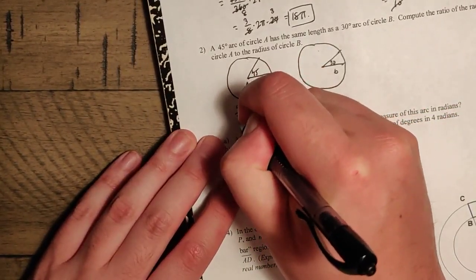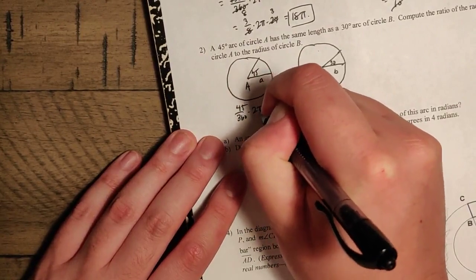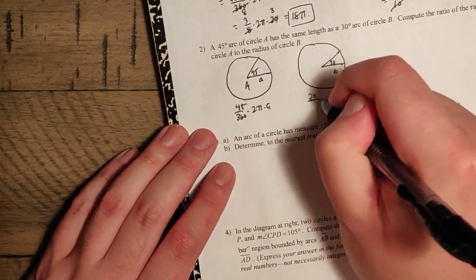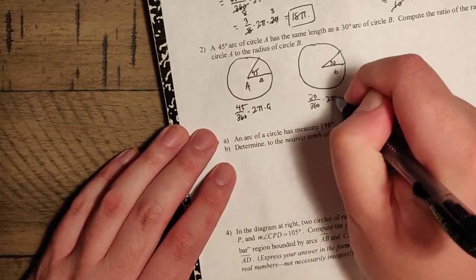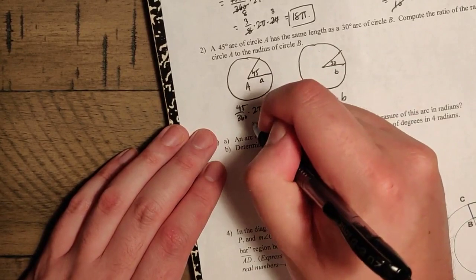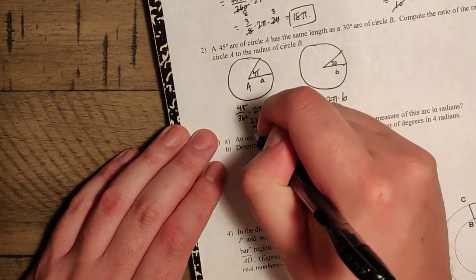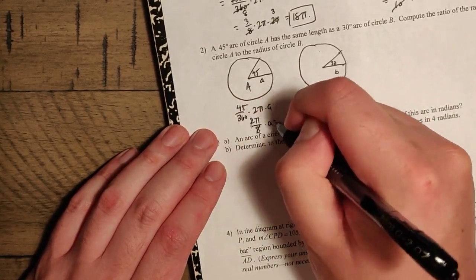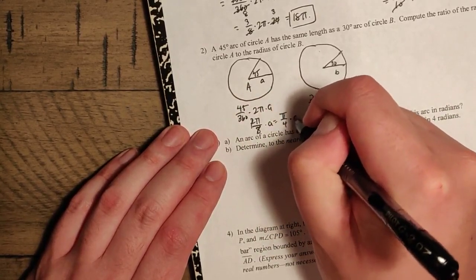So this is going to be 45 over 360 times 2 pi times A. And the second circle is going to be 30 over 360 times 2 pi times B. So 45 over 360 is 1 eighth. So you get 2 pi over 8 times A. And that is pi over 4 times A.